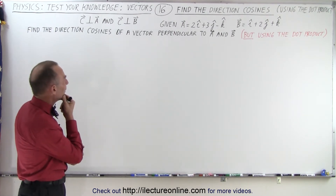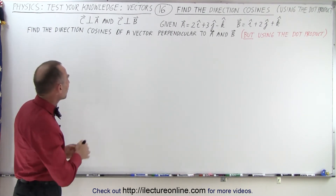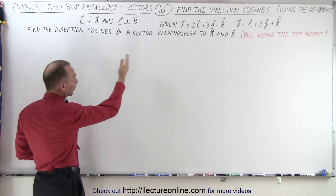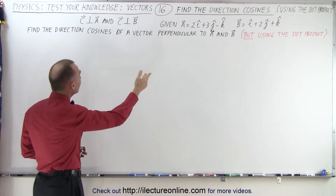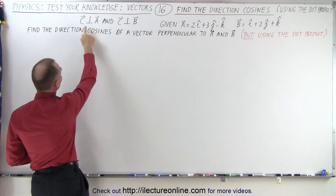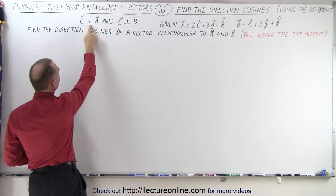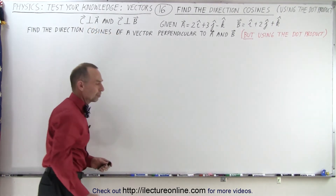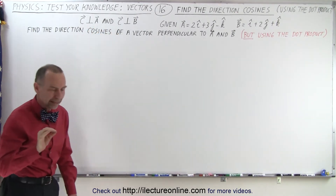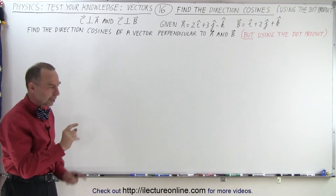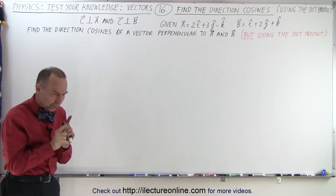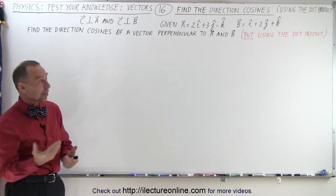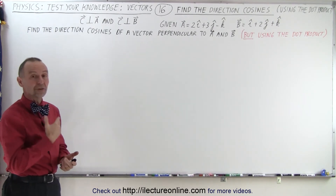How do we do that? Well, we realize that — let's call the other vector that's perpendicular to A and B, let's call it C. So we know that C is perpendicular to A and C is perpendicular to B. And then we realize with the dot product, if two vectors are perpendicular and we take the dot product, the result is zero.